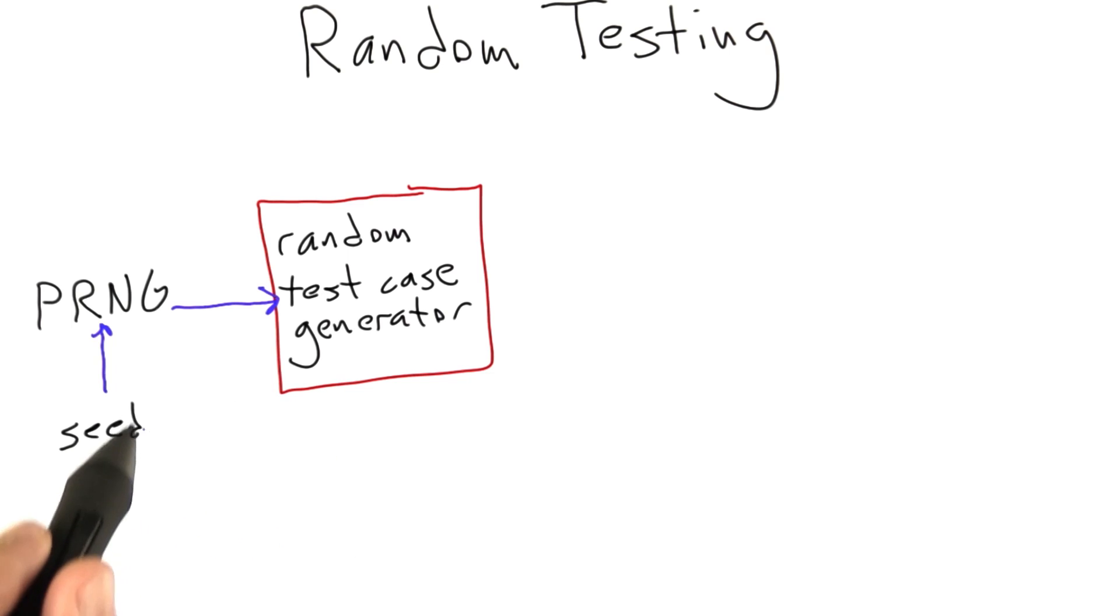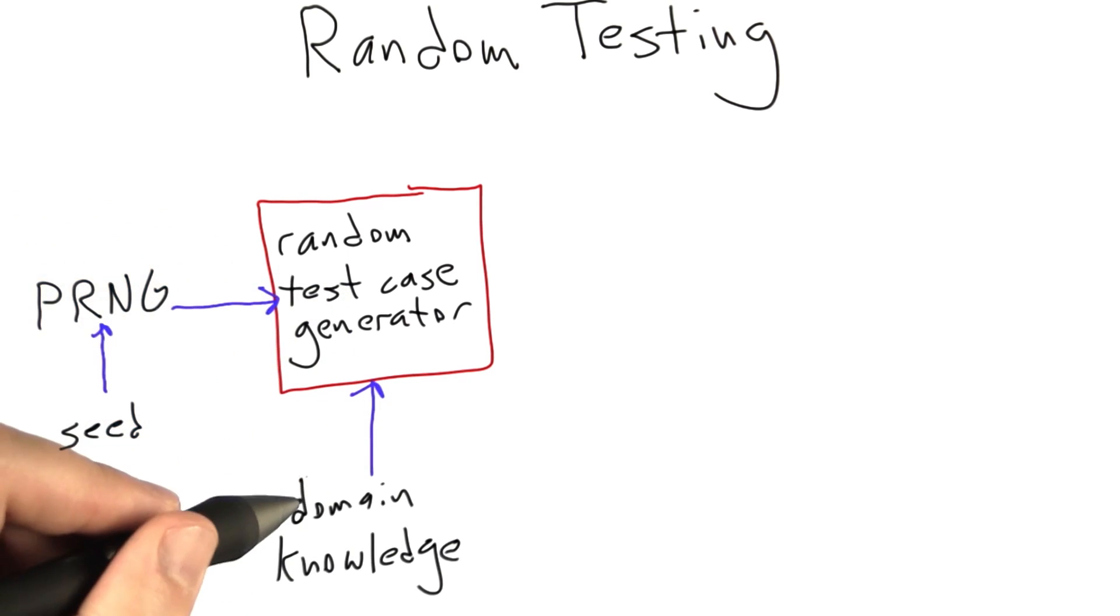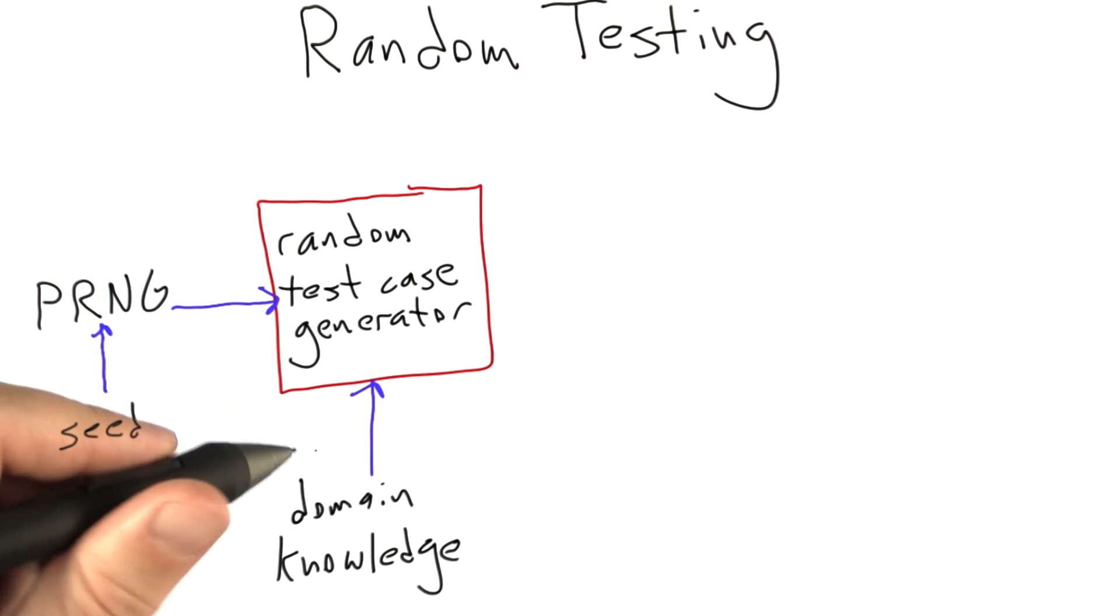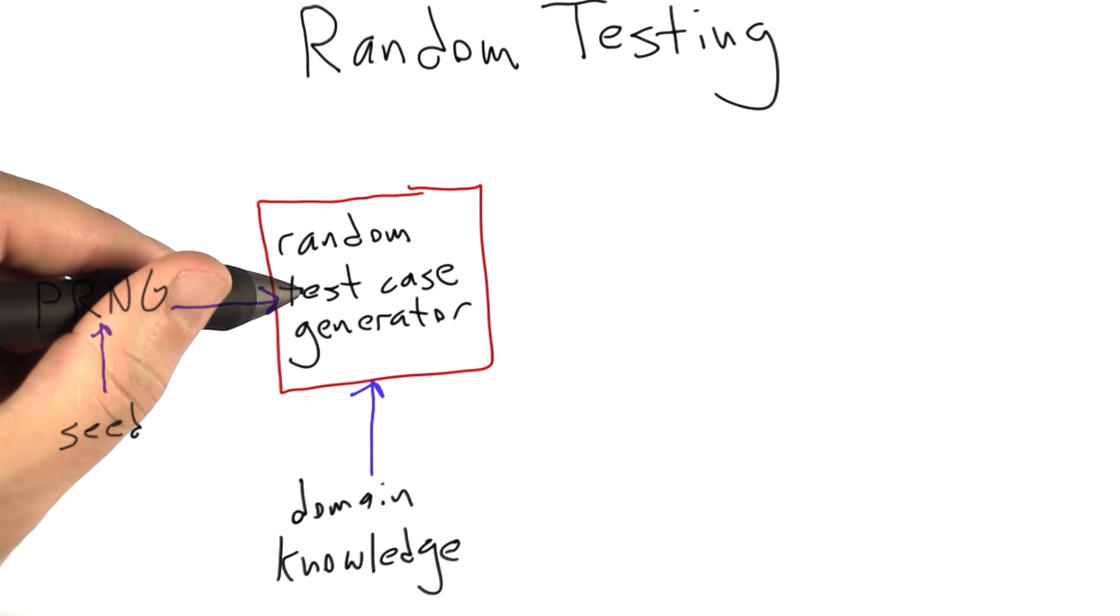The other thing that goes into a random test case generator - usually to make a good one, you need a significant amount of domain knowledge. By domain knowledge, I just mean that you have to understand some properties of the software under test. We'll talk in quite a bit of detail about what form this domain knowledge might take and how you encode this as part of the random test case generator.